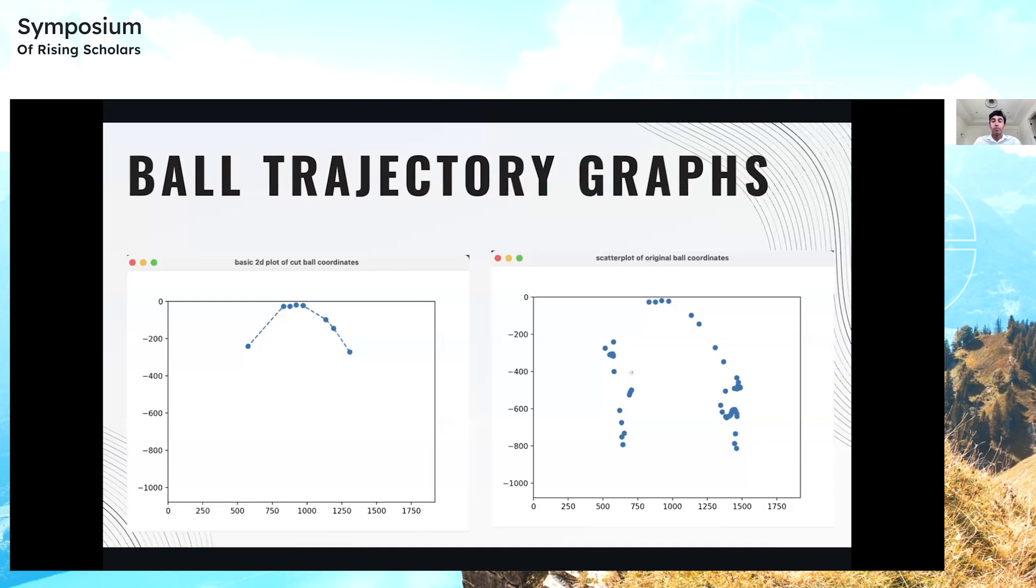Here are some of the ball trajectory graphs my algorithm created. On the bottom right of this slide, I have the original scatter plot of all the ball's coordinates. These include the false positives. Some points include the algorithm taking my head as the ball, and some include other objects lying outside the frame.